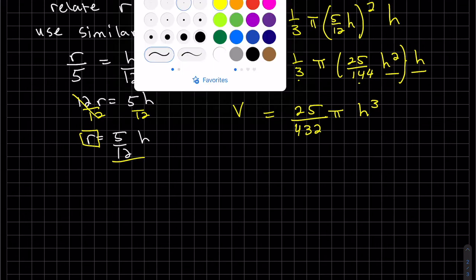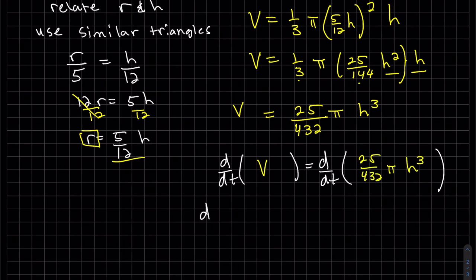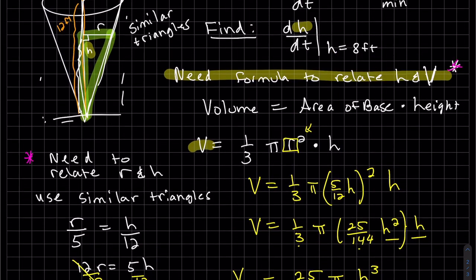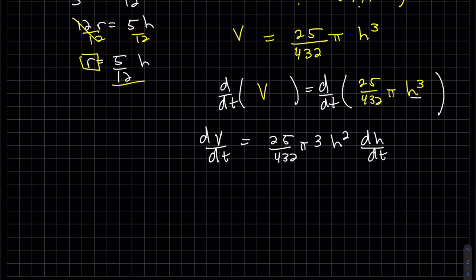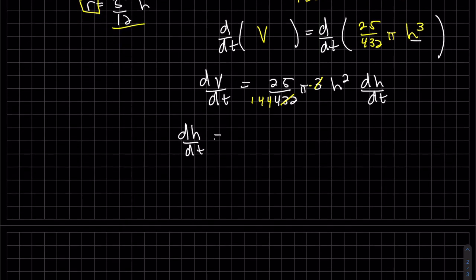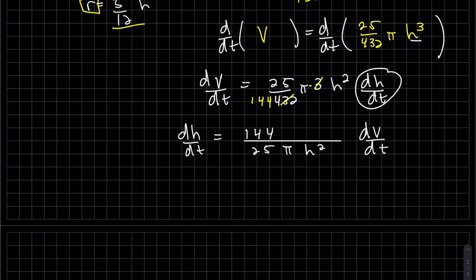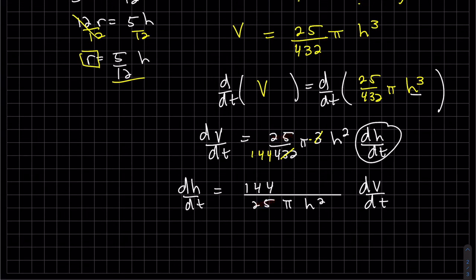Now take the derivative of both sides with respect to t. The derivative of h³ is 3h², multiplied by dh/dt via the chain rule. So dV/dt = (25π/144)·3h²·(dh/dt). To isolate dh/dt, divide both sides by the constants and by h².